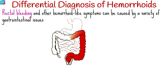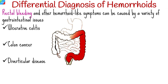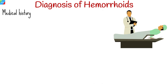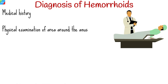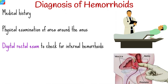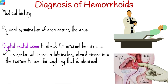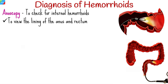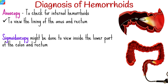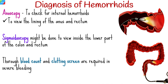Rectal bleeding and other hemorrhoid-like symptoms can be caused by various gastrointestinal issues. Therefore, it is important to exclude other causes of rectal bleeding, such as ulcerative colitis, colon cancer, and diverticular disease. Anyone experiencing these symptoms should seek medical attention. Your doctor will ask about your medical history and perform a physical exam. External hemorrhoids are diagnosed by examining the area around the anus, while a digital rectal exam checks for internal hemorrhoids. Your doctor may perform anoscopy to view the lining of the anus and rectum, or sigmoidoscopy to view the lower colon. A thorough blood count and clotting screen are required if there is severe or sustained bleeding or signs of anemia.